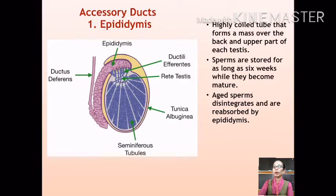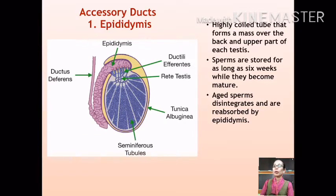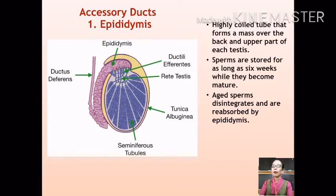The sperms produced in the testes are subsequently released out through the accessory ducts and released into the epididymis through the rete testes. The rete testes forms a fine network of tubules between the testes and the epididymis. The epididymis is a long coiled tube present on the posterior or backside of each testes, where sperms go for storage and maturation.